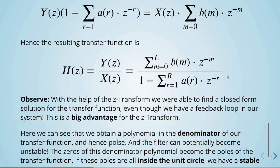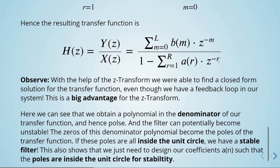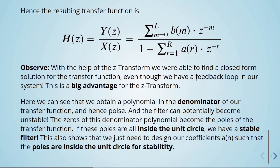We can see that we obtain a polynomial in the denominator of our transfer function, and hence poles. The filter can potentially become unstable when we have poles in the transfer function — with a denominator, we have poles, and there is the chance it can become unstable. The zeros of this denominator polynomial become the poles of the transfer function. If these poles are all inside the unit circle, we have a stable filter. This shows that we just need to design our coefficients so that the poles are always inside the unit circle for stability.